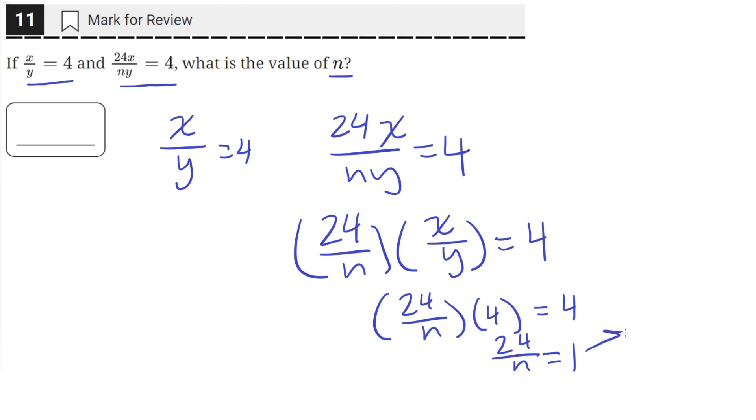And then if we multiply both sides by n to get n alone, we'll get that 24 equals n. So we multiply both sides by n, so 24 divided by n times n is just equal to 24, and 1 times n is just equal to n. So now we get that the value of n is equal to 24,